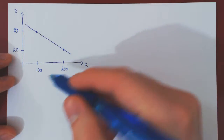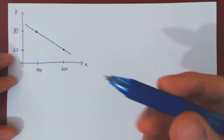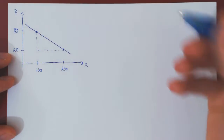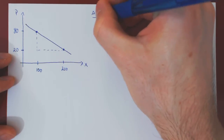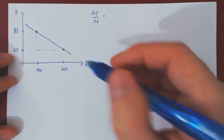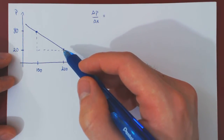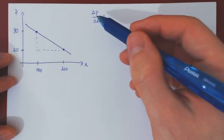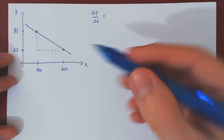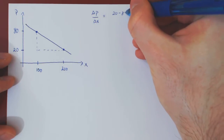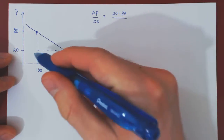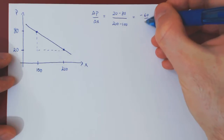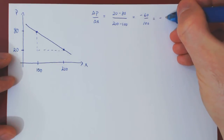How do we find the equation of this line given the two points on it? The first thing we need is the slope of the line, given by the change in p over the change in x. Taking (200, 20) as the terminal point: the change in p is 20 minus 80 over the change in x, 200 minus 100, which gives us negative 60 over 100, or negative 0.6.